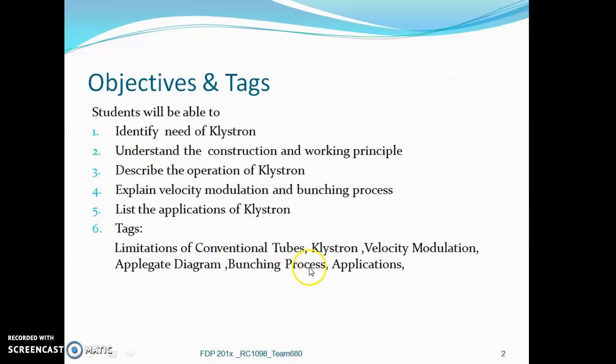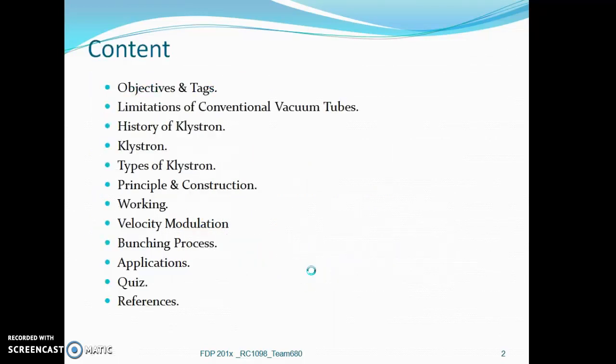These are the important texts associated with the Klystron. The contents include objectives, limitations of conventional vacuum tubes, history of Klystron, the types along with principle, construction, working, the basic concepts of velocity modulation and bunching process, applications, quiz and references.